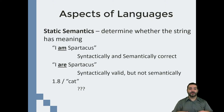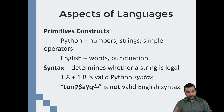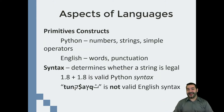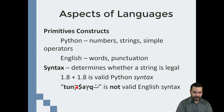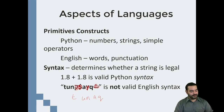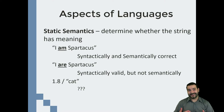That's actually where we get into static semantics — determining whether a string has meaning. If we look at that string again, it does have symbols that are not English. But if we were to cover those up and get rid of them, we'd be left with T-U-N-A-Q, and that word has no meaning in the English language. That's where we get into static semantics — the same kind of concept.